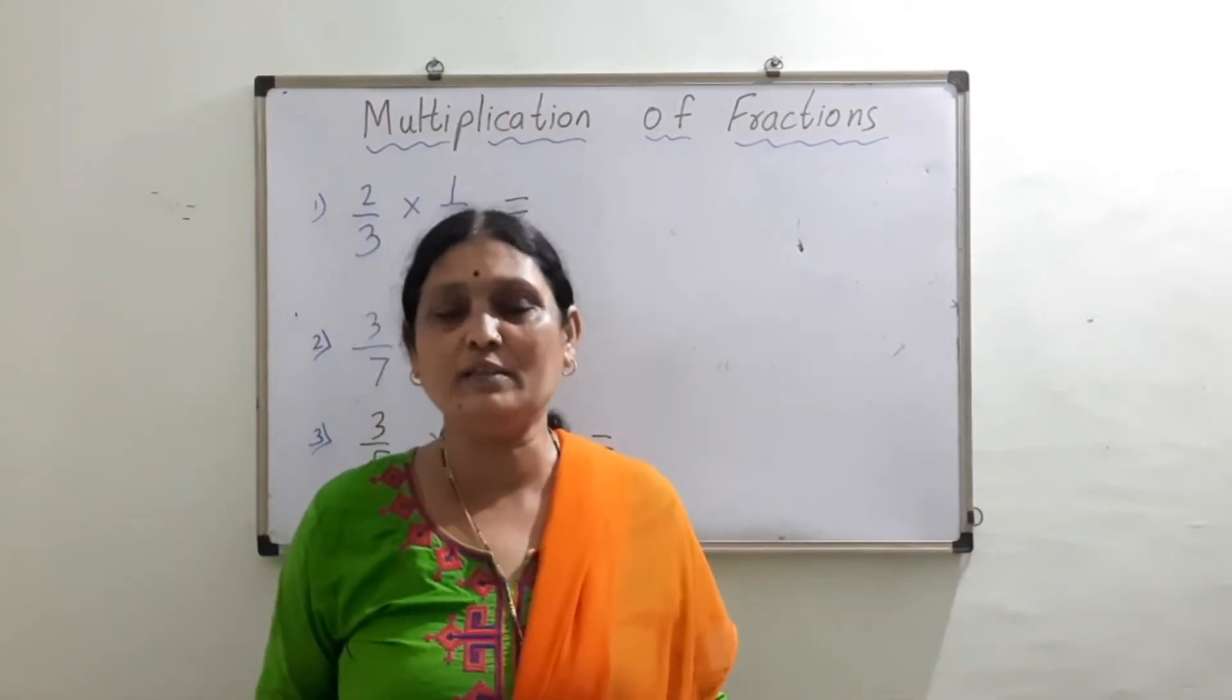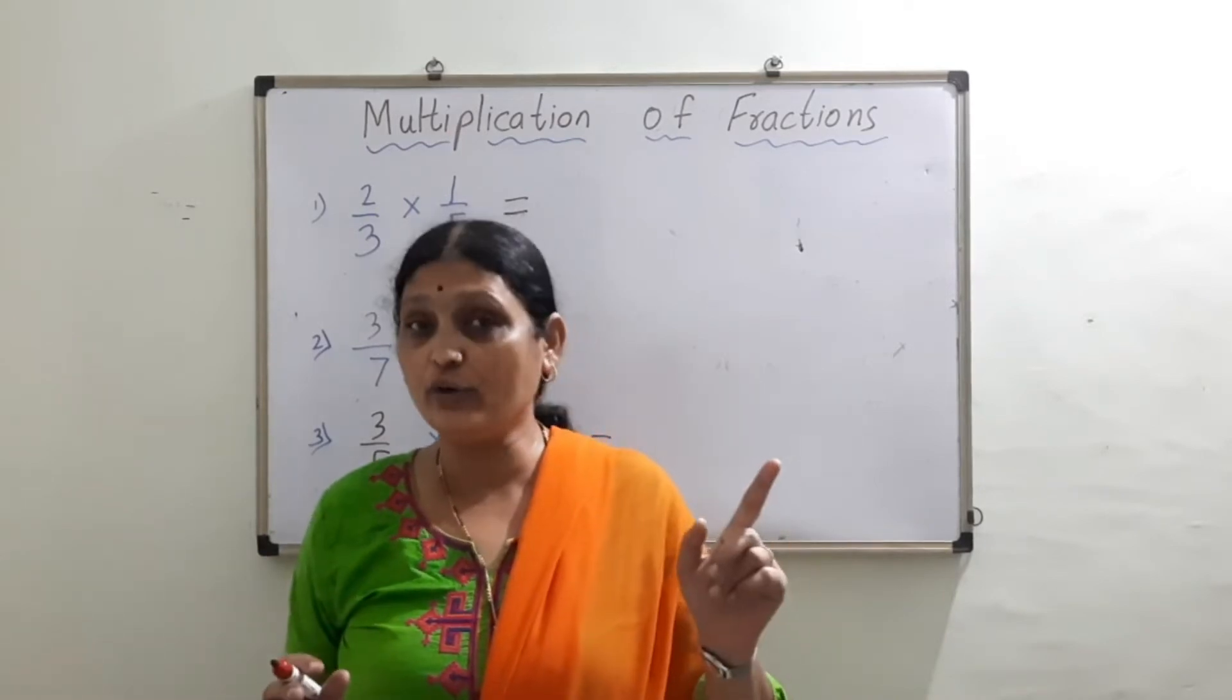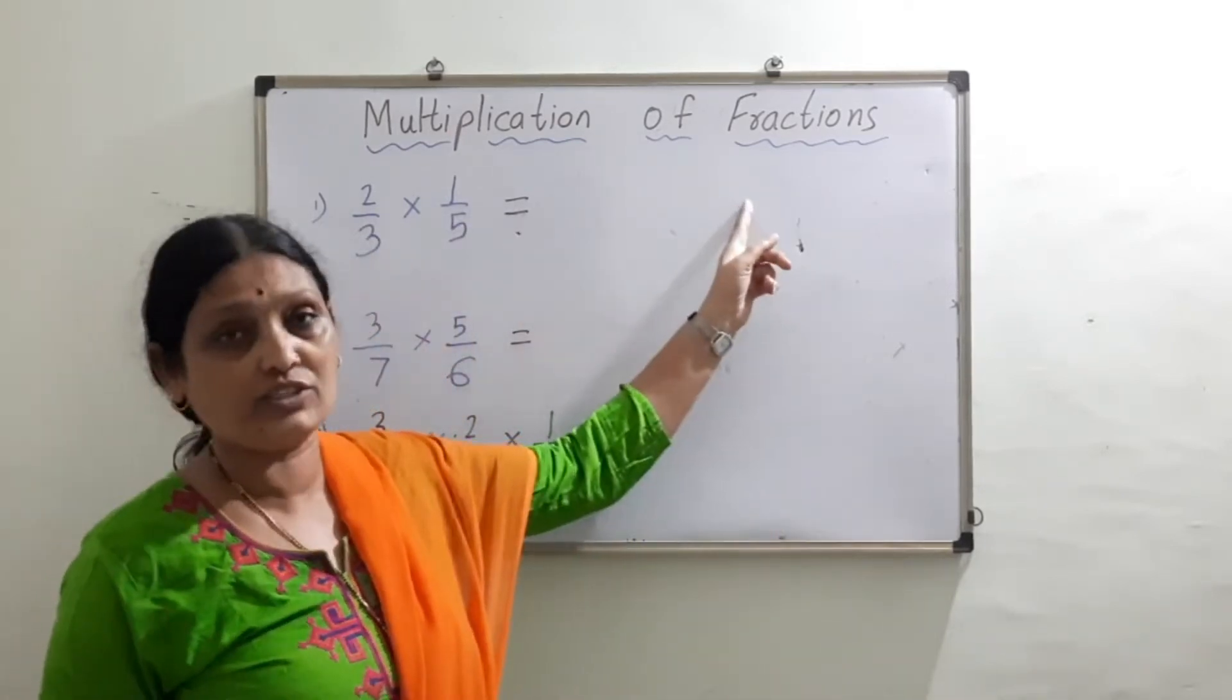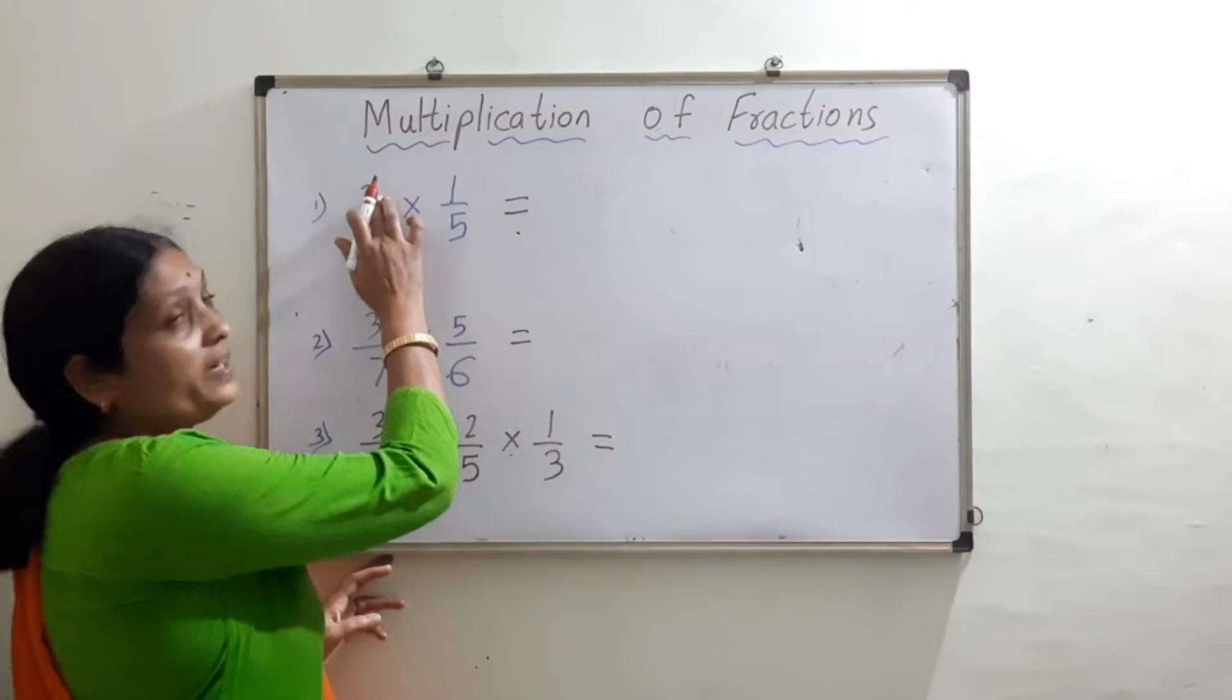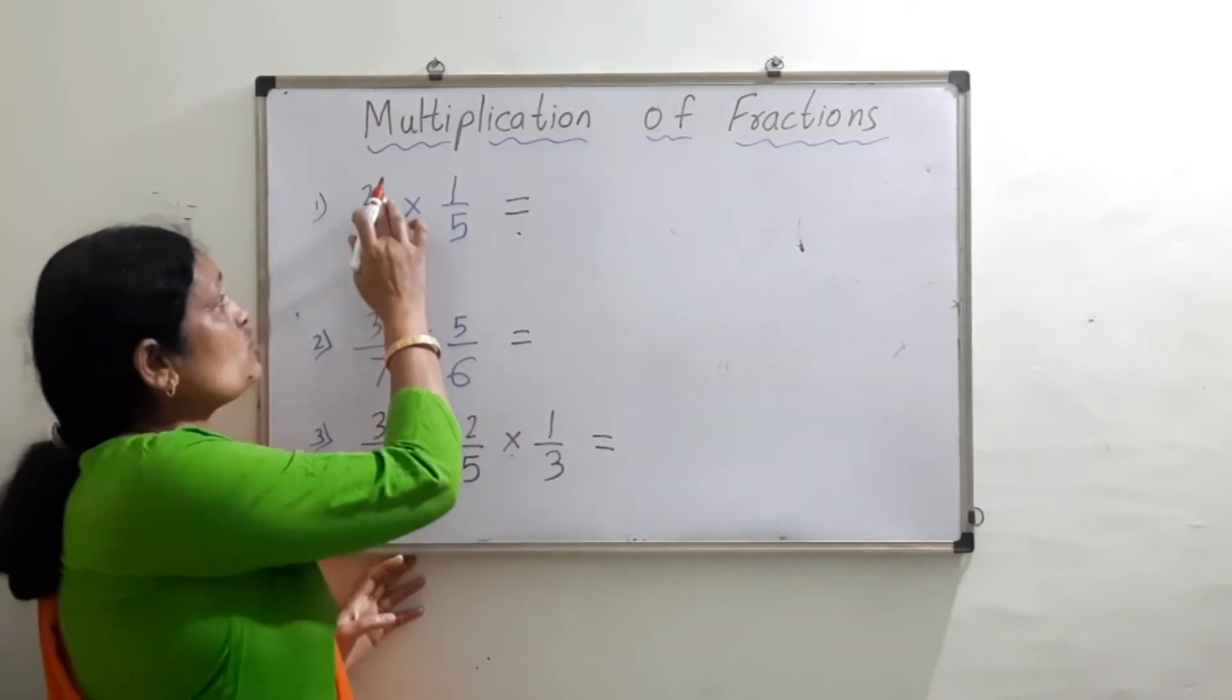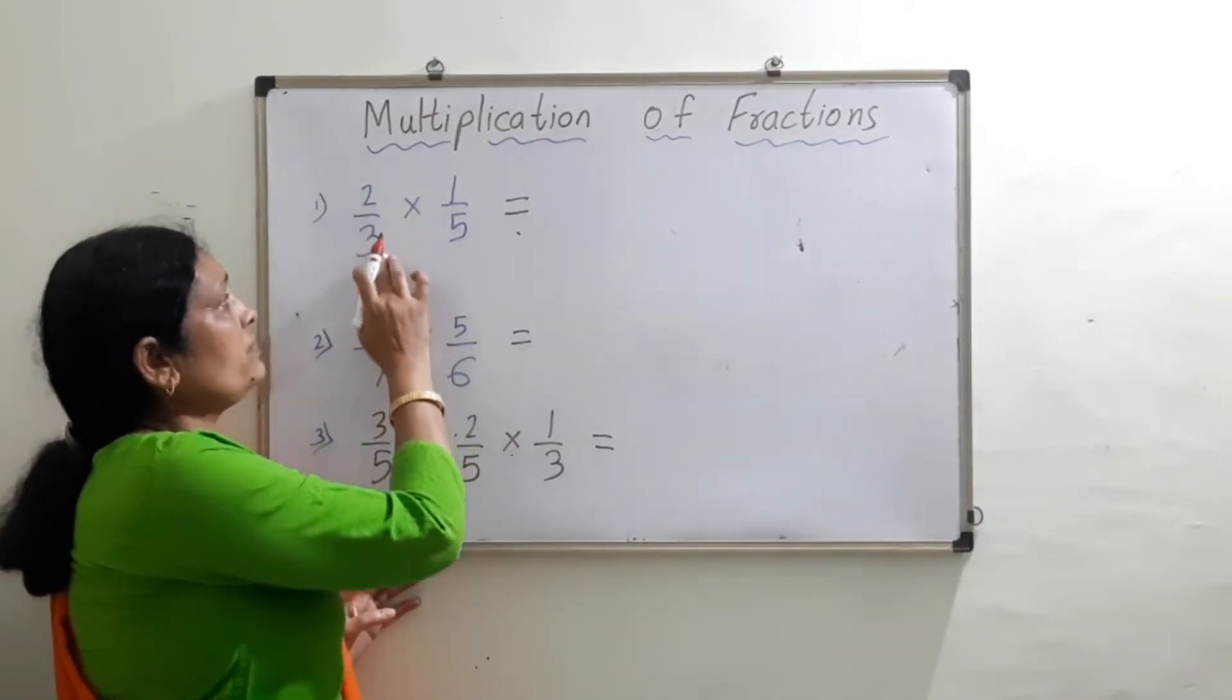Hello children, welcome to Math Park. In our park today we are going to learn how to multiply fractions. A fraction has a numerator and denominator. We read it as 2 upon 3, where 2 is the numerator and 3 is the denominator.